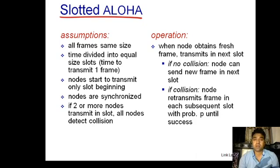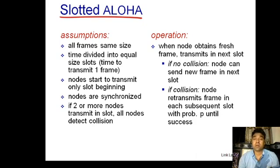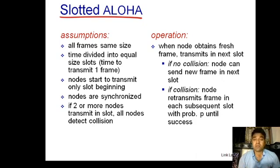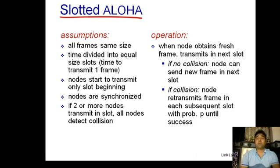Just like Pure ALOHA — whenever a node has a frame to transmit, it transmits that frame at the beginning of the coming time slot. If there is no collision, it is a successful transmission. If there is a collision, the node keeps sending that frame with probability p in the coming time slots, always at the start of the time slot.